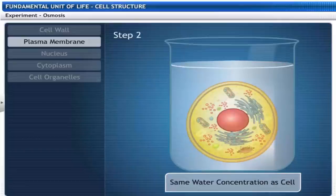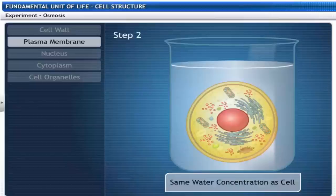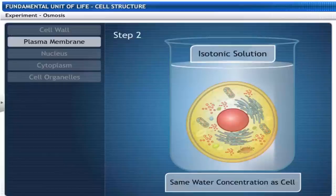If the medium has the same water concentration as the cell, there is no net movement of water through the membrane and the cell stays the same size. Such a solution is known as an isotonic solution.